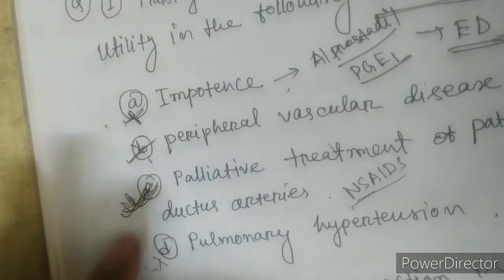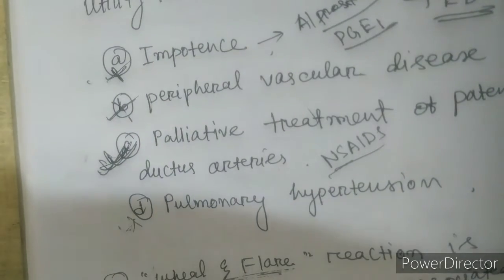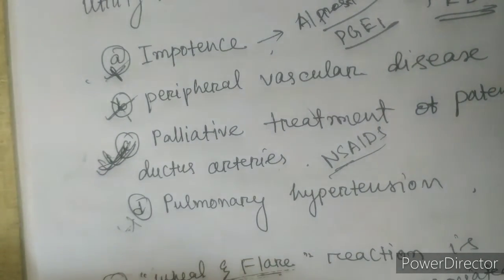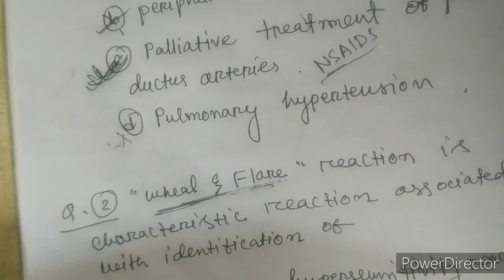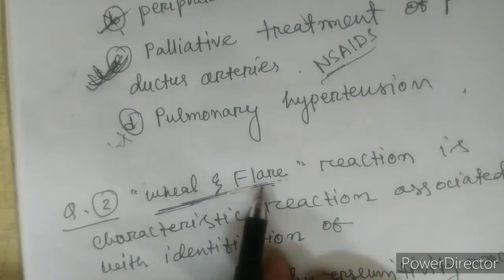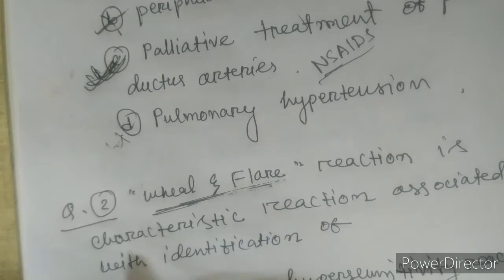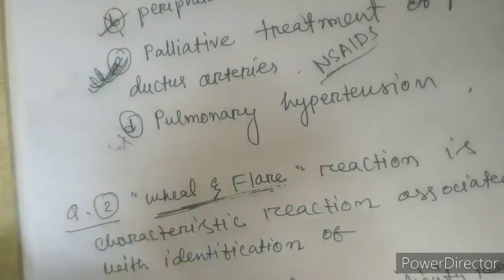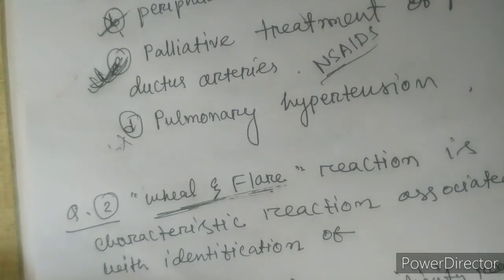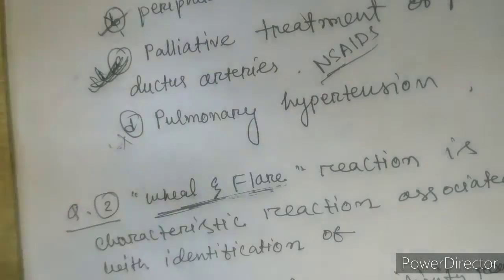Be careful — previous year questions may repeat the same nature or logic of questions. Now let's discuss question two: 'Wheal and flare reaction is a characteristic reaction associated with which hypersensitivity reaction type?' — Type 1, Type 2, Type 3, or Type 4. There are up to four types of hypersensitivity reactions, each with a specific mechanism.